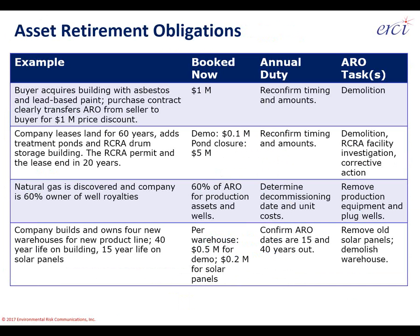The asset owner then has an annual duty to reconfirm timing and amounts, and ultimately the tax-deductible activity at the very end is performing the demolition task covering the asbestos and lead-based paint. Second example: a company leases a property for 60 years and adds treatment ponds and a RCRA drum storage building with a federal RCRA permit. The lease and RCRA permit are both scheduled to end in about 20 years. What needs to be booked now is the present value of that demolition and pond closure, with the annual duty to reconfirm the timing, amounts, and outcomes for the next 20 years.